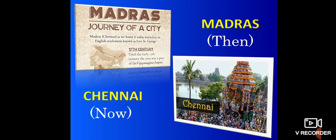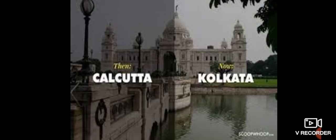For example, Madras. Pahle Madras ke naam se Chennai ko jaana jaata tha. Haan, aaj hum jisse Chennai ko jaante hain, usse pehle Madras kehte the.